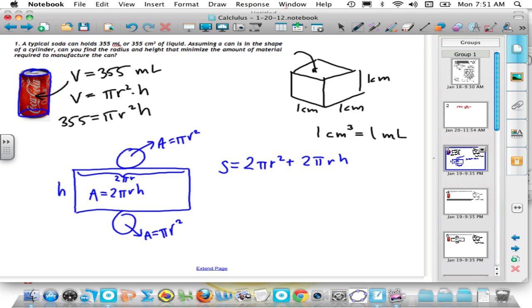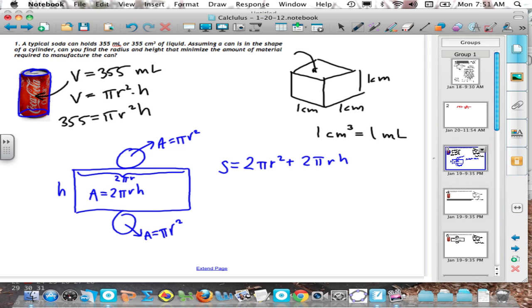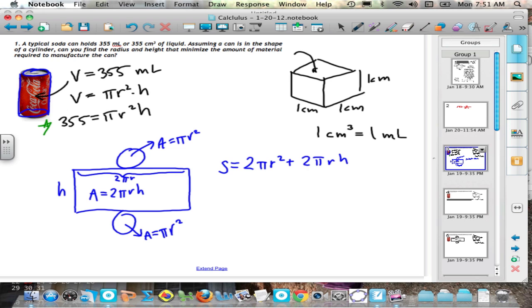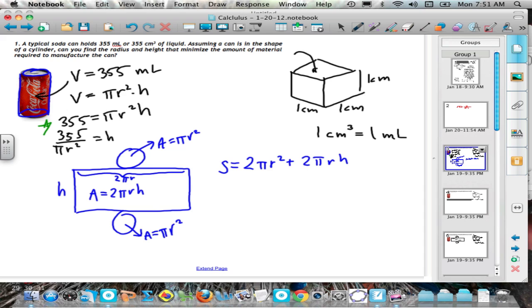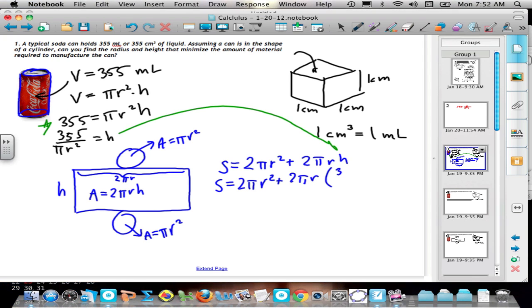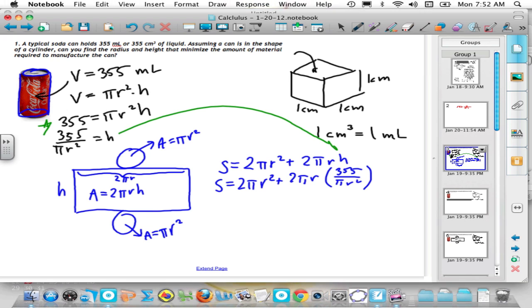Now what I'd like to do is get one expression with just one variable r. So what we're going to do is solve this volume formula, 355 over pi r squared. If we solve that for h, we get 355 over pi r squared. That is h. Now we can do some substitution. So taking this h and putting it in here, we're going to get now for S is 2 pi r squared plus 2 pi r, and it's going to be 355 over pi r squared.